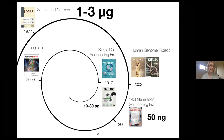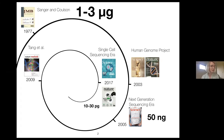I want to start by telling you how revolutionary single cell sequencing really is. To understand this, we have to go back to the start of sequencing. In 1977, Frederick Sanger invented Sanger sequencing, which allowed us to look at genome or RNA information for the first time. This still required quite a lot of starting material — actually material from millions of cells.